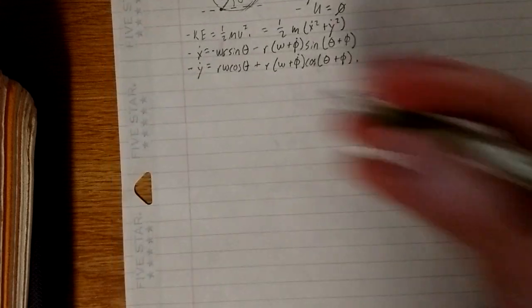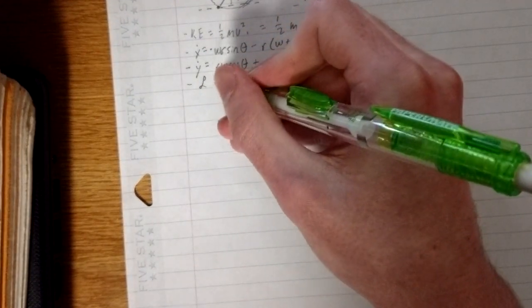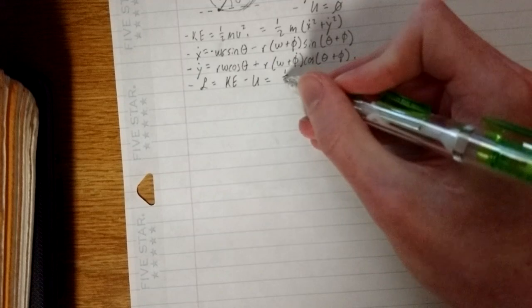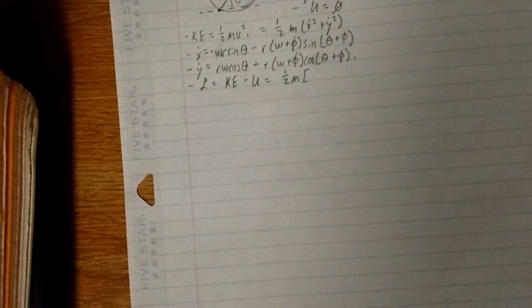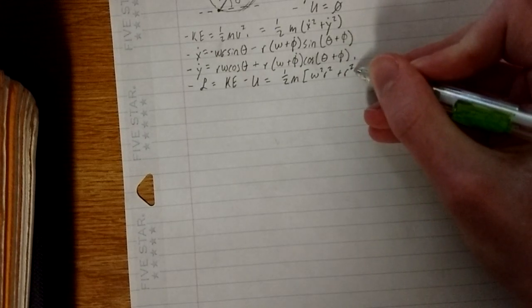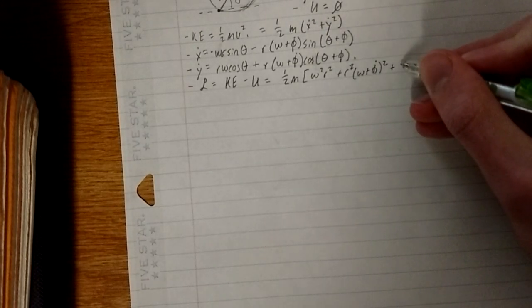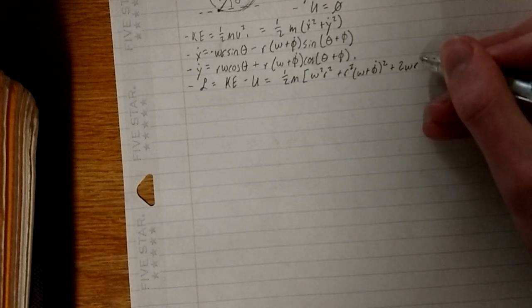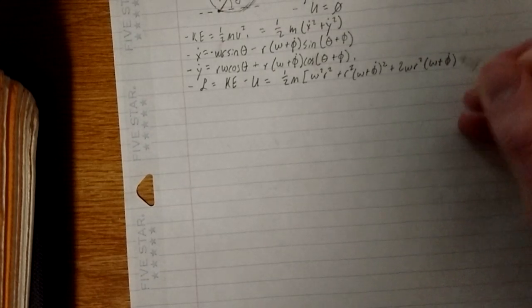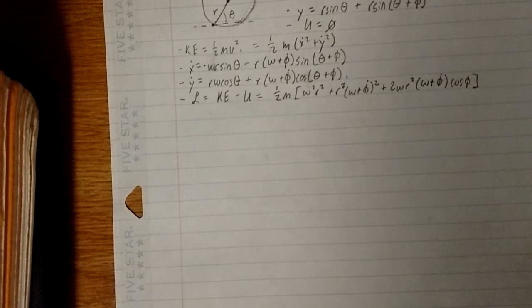But, it still makes for a little bit of messy algebra here. We end up with, of course, the Lagrangian is the kinetic energy minus the potential. But our potential is still zero. So, we end up with something looking like one half m times this quantity. Omega squared r squared plus r squared omega plus phi dot squared plus 2 omega r squared omega plus phi dot cosine phi. And I just had to make sure I copied that correctly. It looks correct.